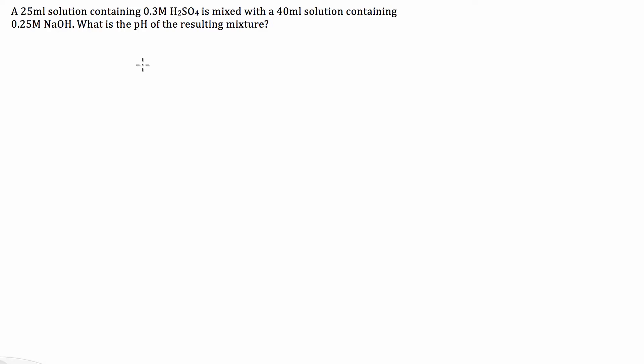Hi guys, I've had a request to do a question involving neutralisation and pH. So what we have here is a 25ml solution containing 0.3 moles per litre of sulphuric acid mixed with a 40ml solution containing 0.25 moles per litre of sodium hydroxide. What is the pH of the resulting mixture?